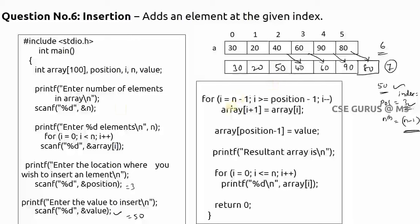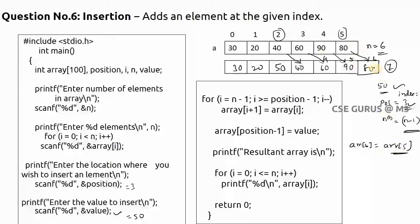Now observe the logic. The loop starts from n minus 1. In our example n is 6, so 6 minus 1 equals 5. The loop runs from 5 down to position minus 1, which is 3 minus 1 equals 2. At i equals 5: array of i plus 1, that is array of 6, equals array of 5. So 80 is moved to array index 6.